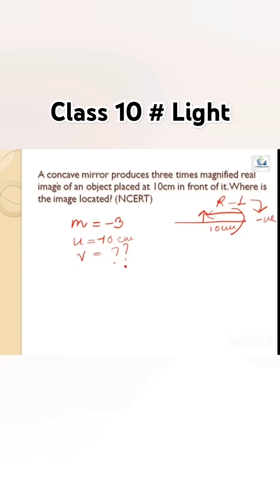The image distance is not given; we have to find where the image is located. That is, we need to find the image distance v. By the magnification formula, we know that m equals minus v by u.